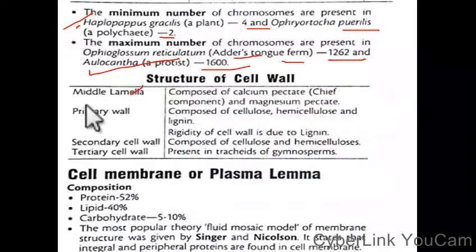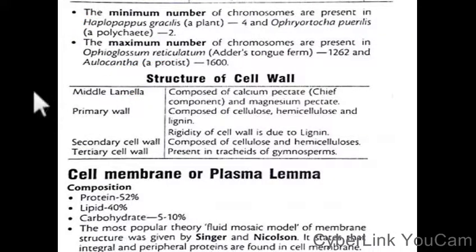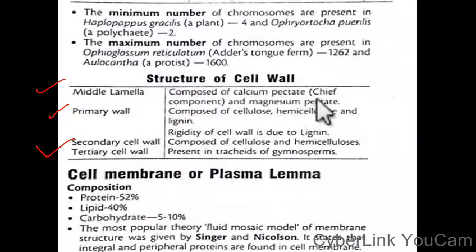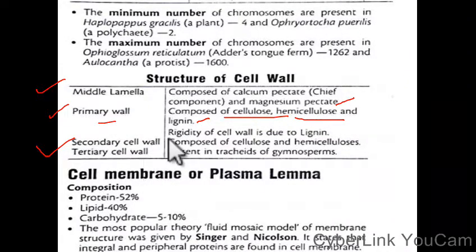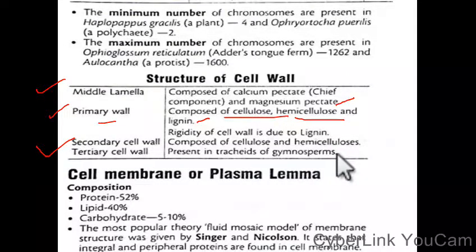The structure of the cell wall includes the middle lamella, primary wall, and secondary cell wall. The middle lamella is composed of calcium and magnesium pectate. The primary cell wall is composed of cellulose, hemicellulose, and lignin. The secondary cell wall provides rigidity due to lignin, and is composed of cellulose and hemicellulose, present in tracheids and gymnosperms.